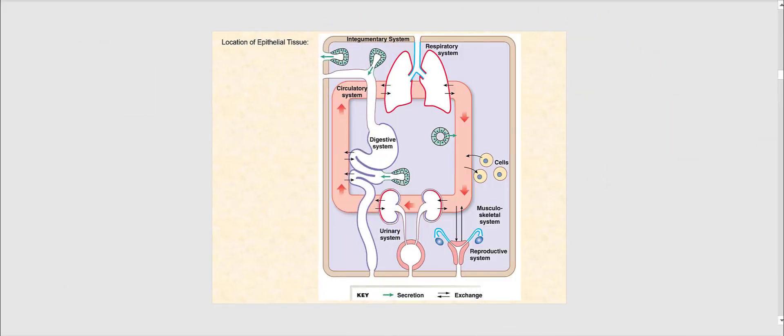Now let's identify epithelial tissue in a body systems image, using a blue highlighter. Starting with the integumentary system — our skin is the most exposed area of our body, so it must be made up of epithelial tissue. The respiratory system is also lined with epithelial tissue, since it lines passageways, ducts, and canals.